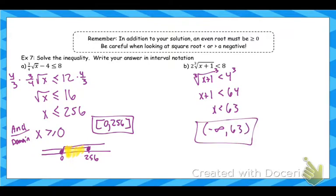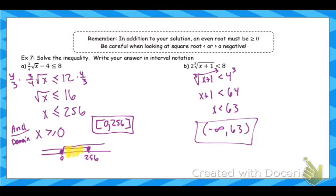Pay attention to parentheses versus brackets in interval notation. If the inequality is strict (less than, not or equal to), use a parenthesis; if it's less than or equal to, use a bracket. The domain is always set up as greater than or equal to 0, so that endpoint always gets a bracket — unless the original problem's inequality makes it strict, in which case it could become a parenthesis.